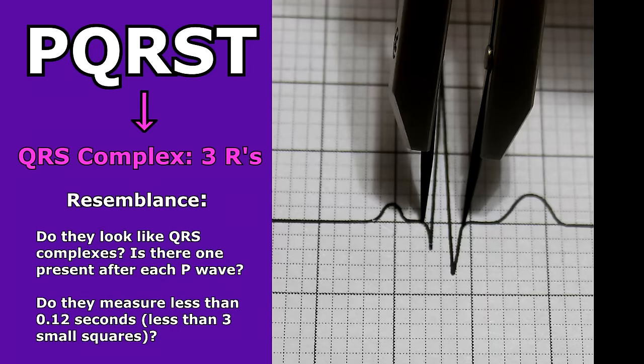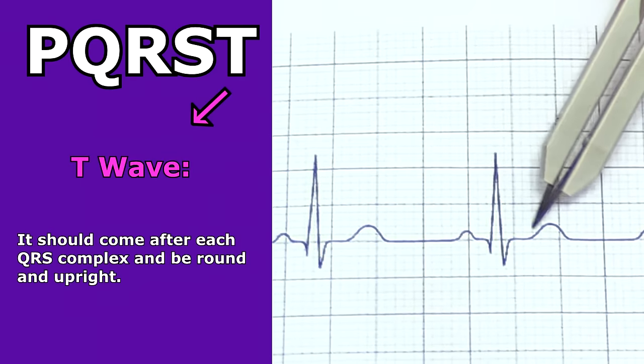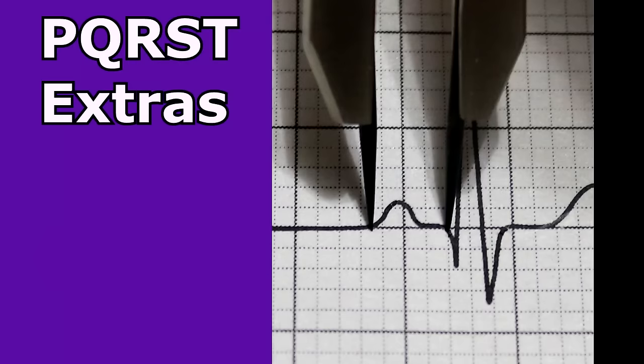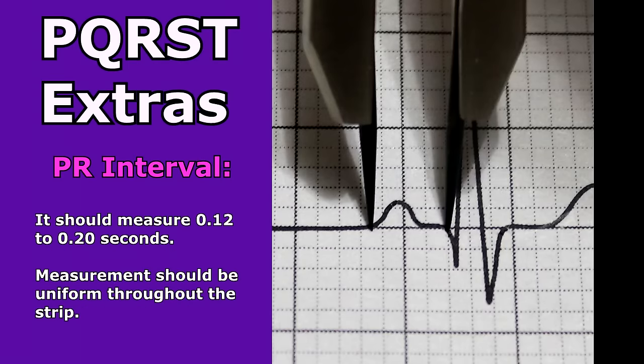Lastly for the QRS, check resemblance - do they look like QRS complexes? Is there one present after each P wave? They shouldn't measure more than 0.12 seconds - less than three boxes. Then look at your T wave: it should come after the QRS complex, be round, and in the upright position in most leads. Then find the extras within the PQRST complex - those intervals and segments. Look at the PR interval: measure from the beginning of the P wave to the beginning of the QRS complex. It should be 0.12 to 0.20 seconds, and the measurement should be uniform throughout the strip.